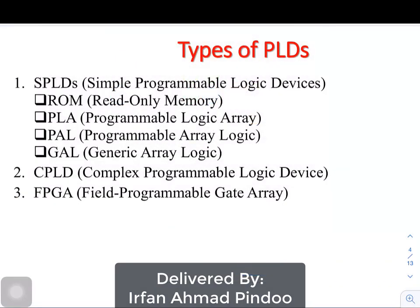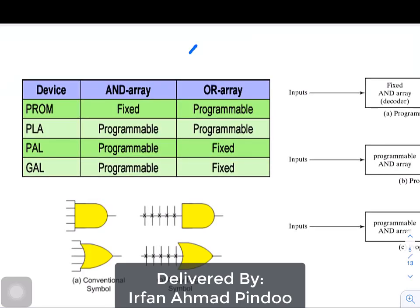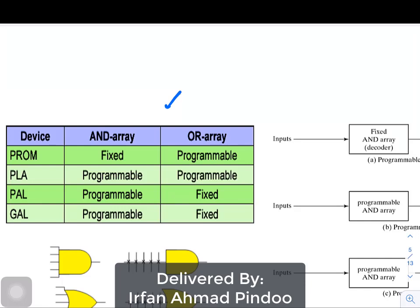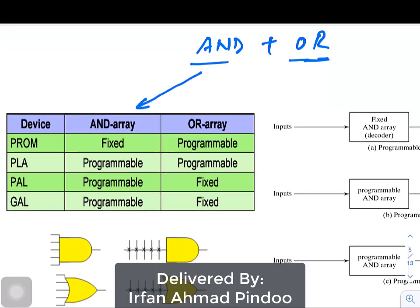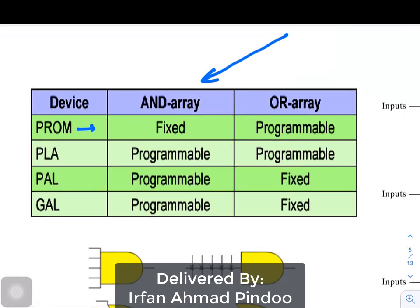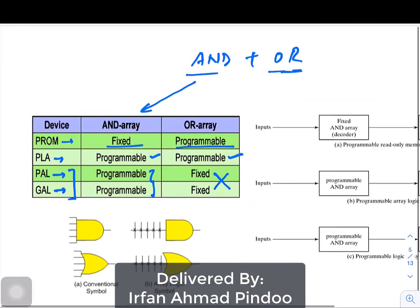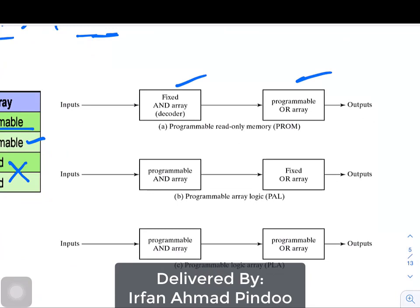Now I will give you a brief introduction regarding the types of SPLD. As I said, a programmable logic device is nothing but an array of AND gates plus OR gates. This table gives you an idea of which arrays would be programmable. For PROM, the AND array is fixed and cannot be programmed, while the OR array can be programmed. For PLA, both arrays are programmable. For PAL and GAL, the AND array is programmable while the OR array is fixed. The same thing is shown in the diagram as well.